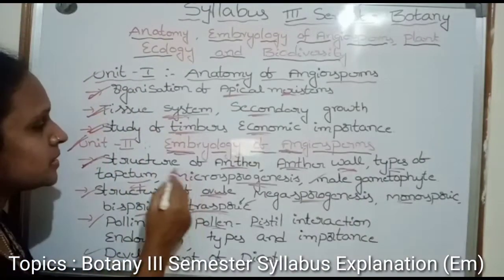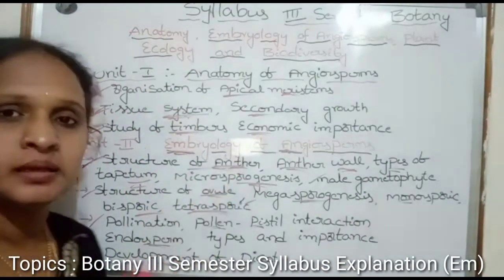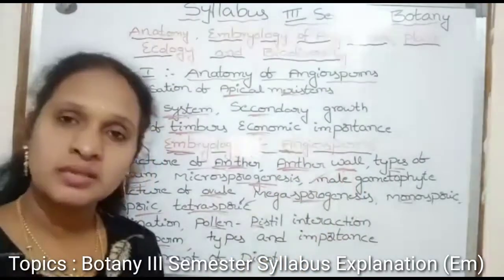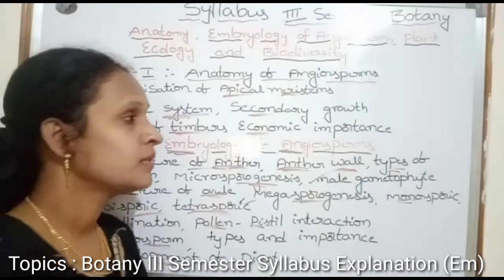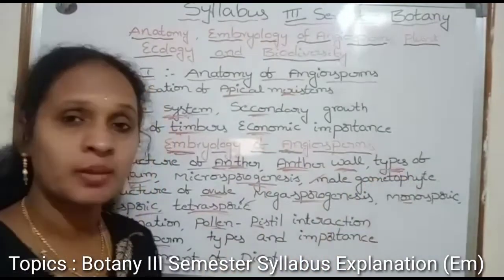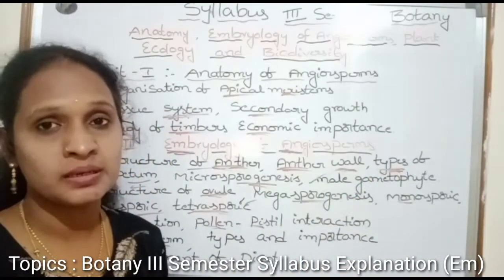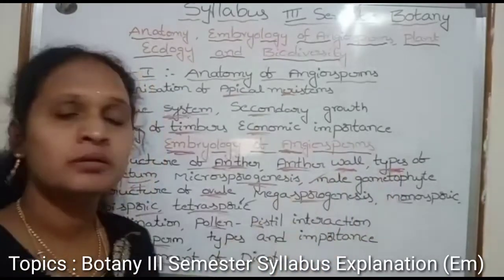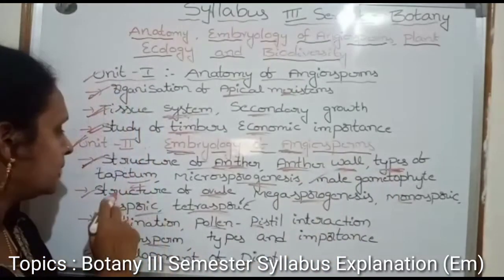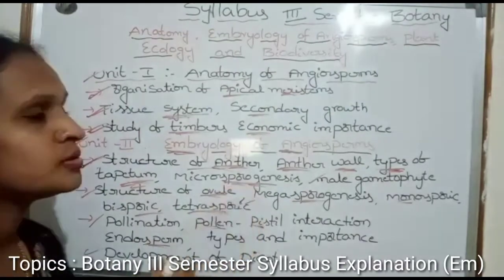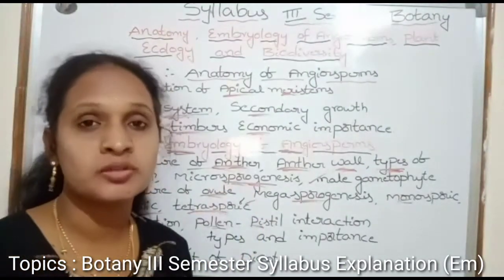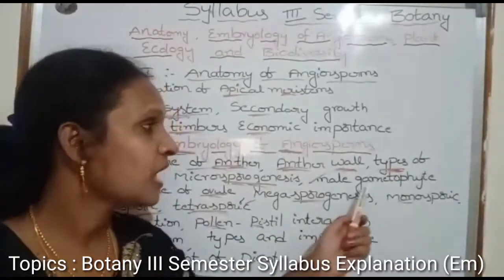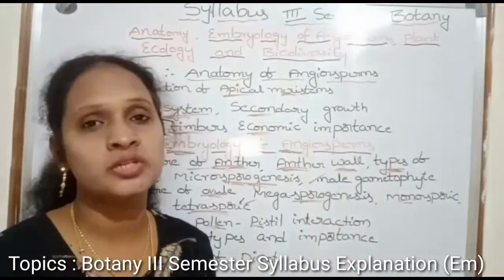In this topic: Structure of Anther — anther means what? Anther is a structure; anther wall — anther walls are the same. The types of tapetum — tapetum means anther is one part. There are four types of anther walls, meaning tapetum types. Microsporogenesis — microspore development and male gametophyte formation.